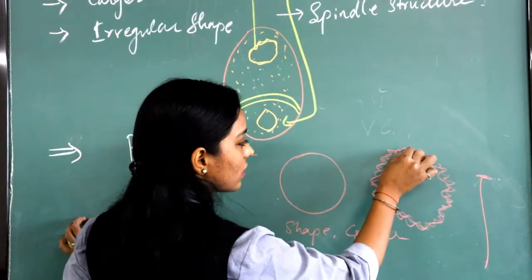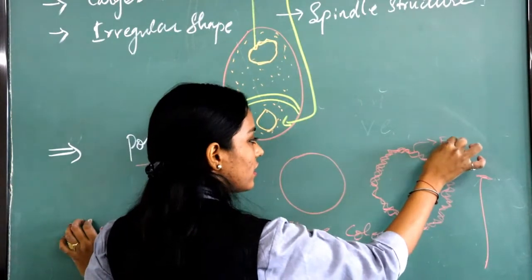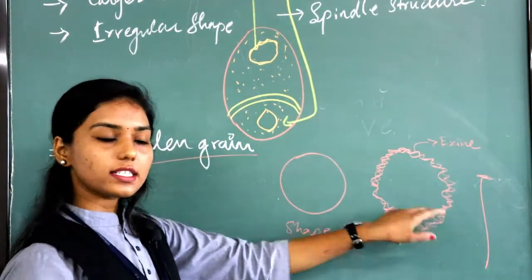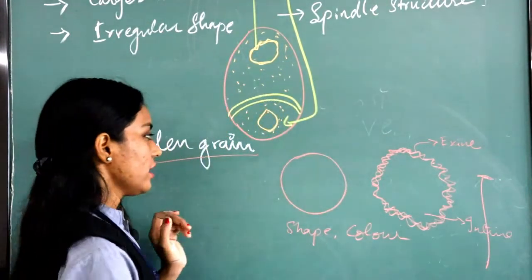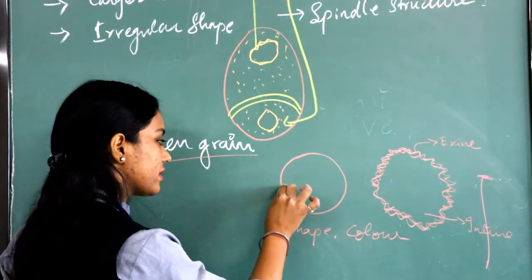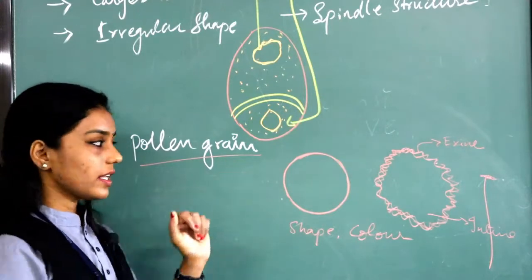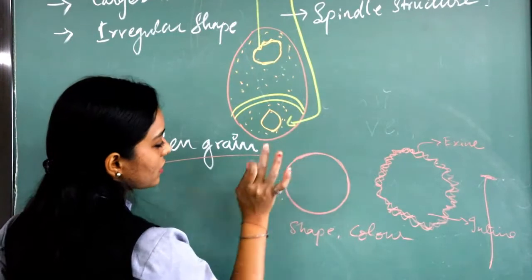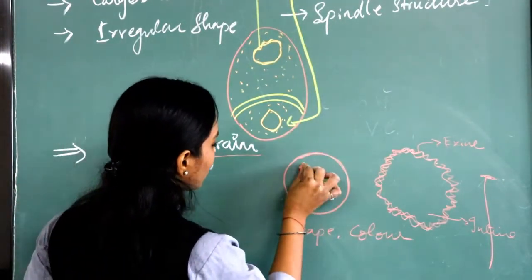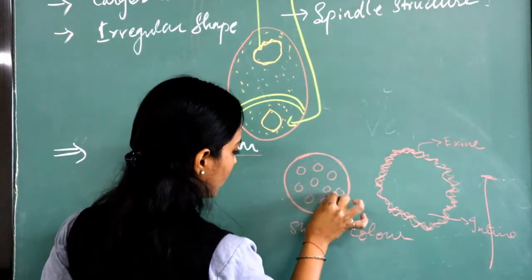This outermost part will be called as exine, and the innermost part will be called as entine. For hibiscus, if you observe microscopically the pollen grain, it is somewhat round in structure. In this microscopic field, more pollen grains are present and they are clearly visible under the microscope.